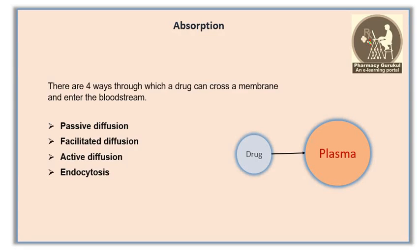The third is active diffusion, an energy-dependent process during which a molecule requires energy in the form of ATP to cross a membrane. The fourth is endocytosis, when a larger drug is transferred through a membrane via invagination or introversion of the membrane.